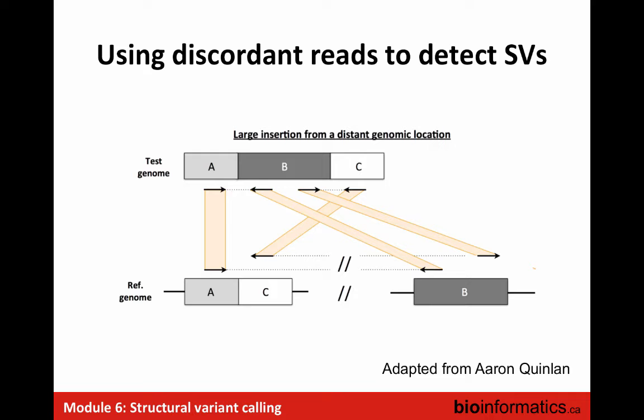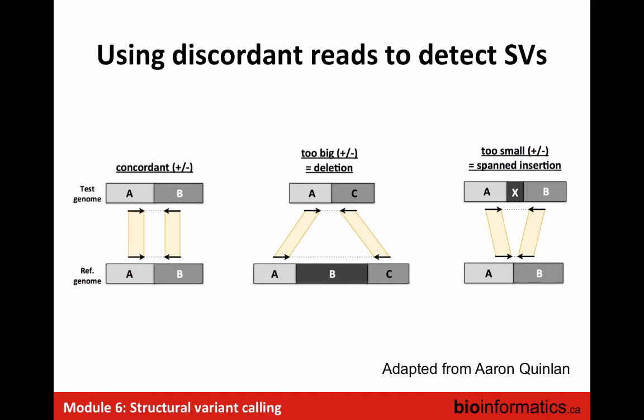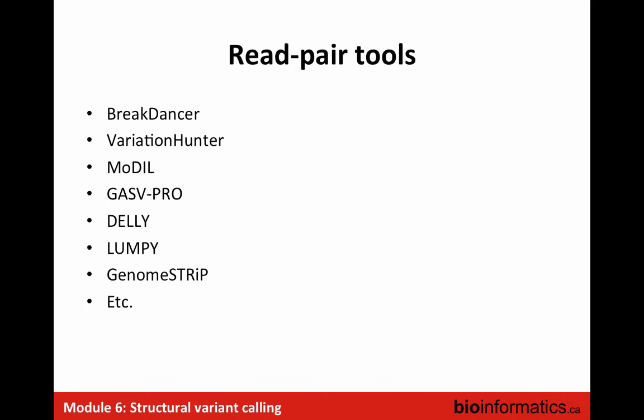The trick is how you implement an algorithm that looks for these patterns and predicts structural variants. There are a number of tools that do this: Breakdancer, DELLY, Lumpy. The one we're going to use is DELLY. They all look for evidence of discordant pairs, and look for multiple instances — because just like with single nucleotide variants, if you see just one weird read you don't care, but if you see multiple reads saying the same thing, that's probably a good sign.